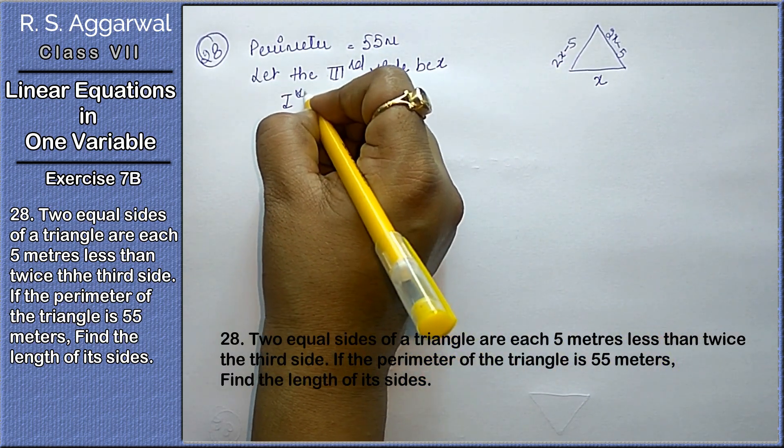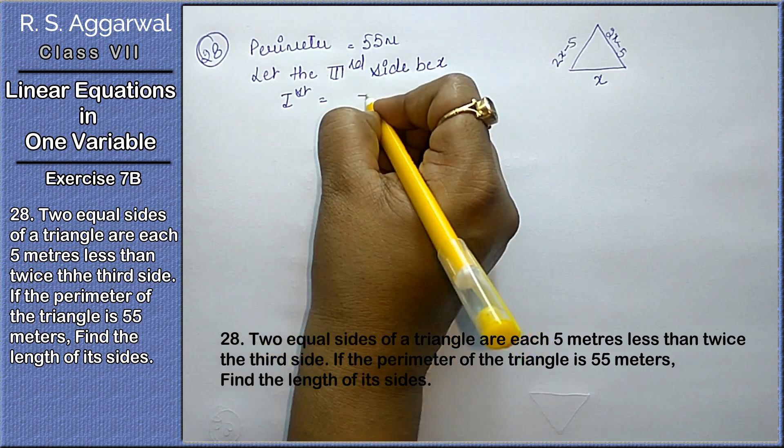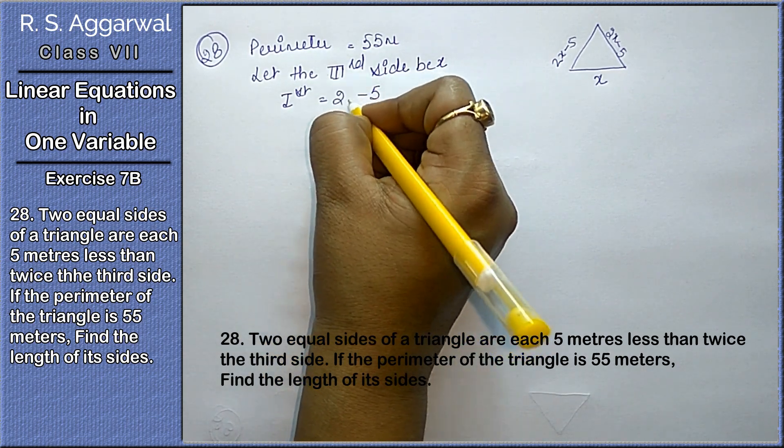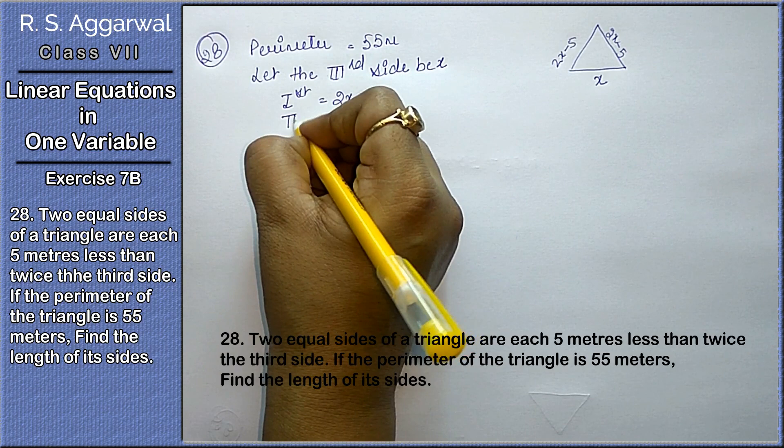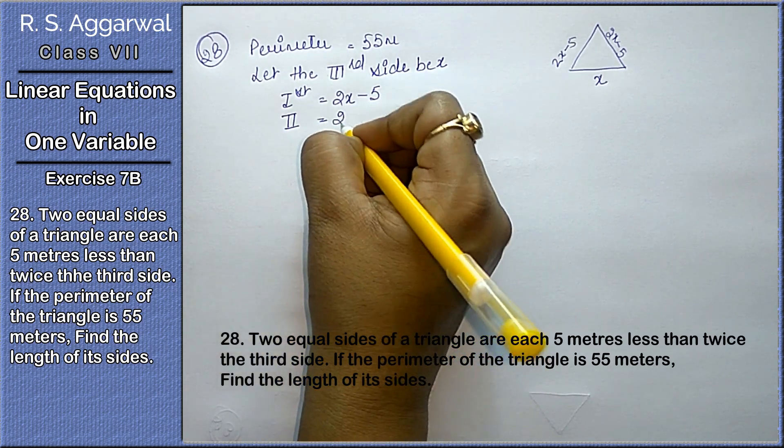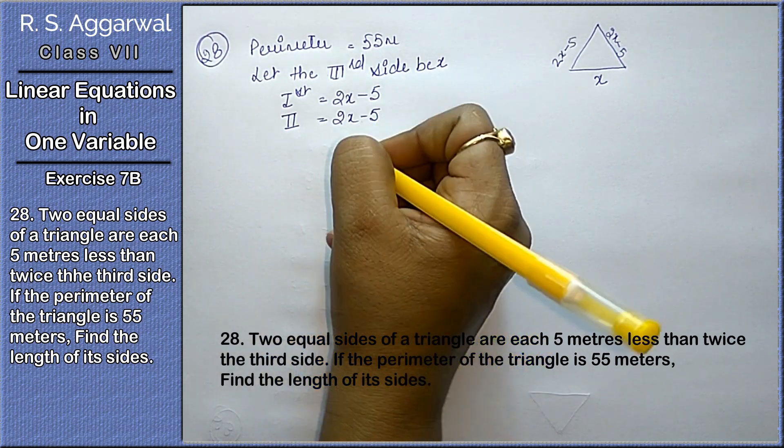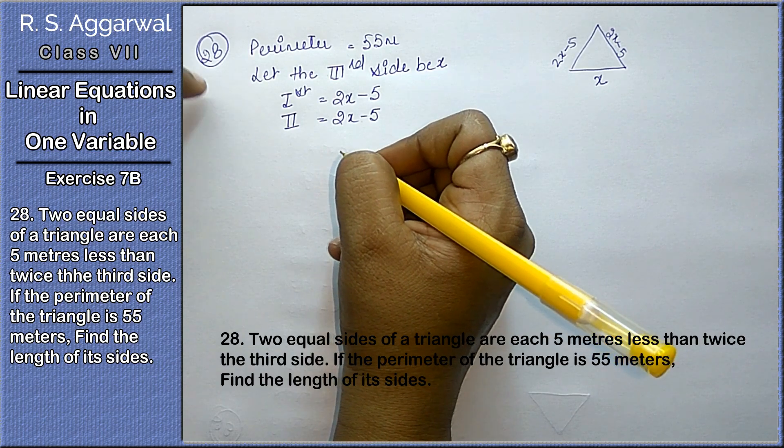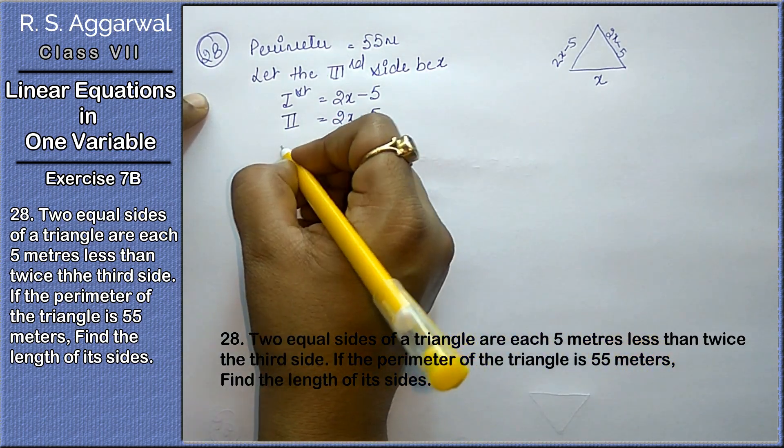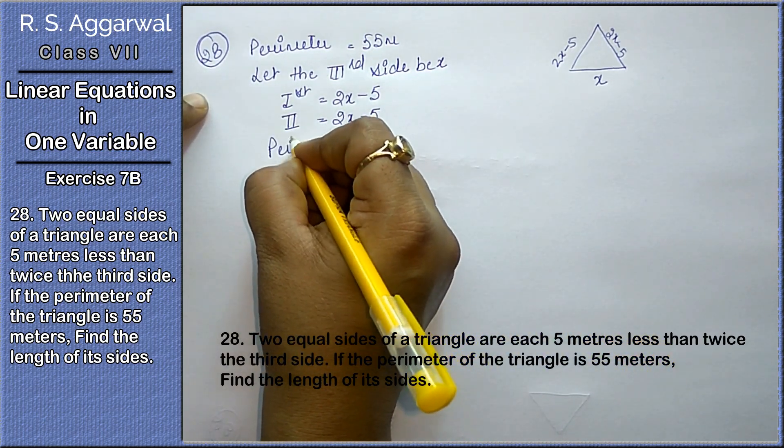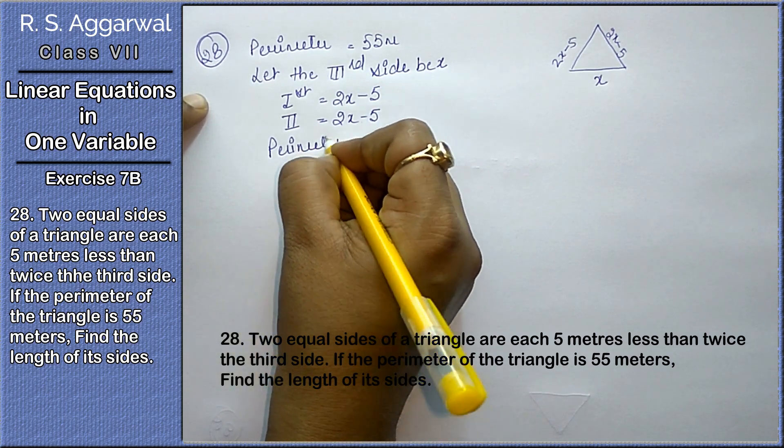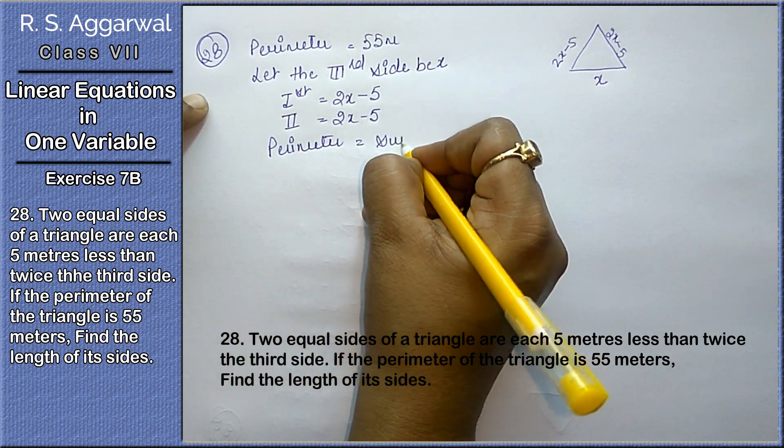First side, what do we do? 5 less than twice the third side. Second side be 2x minus 5, because they are telling two sides are equal. Perimeter equals to sum of all sides.